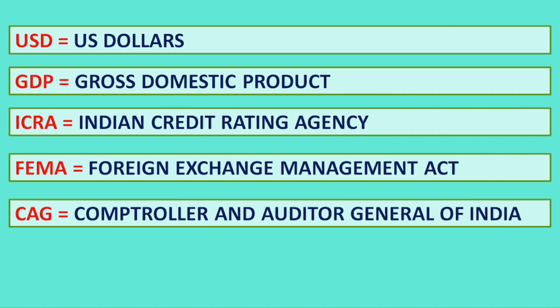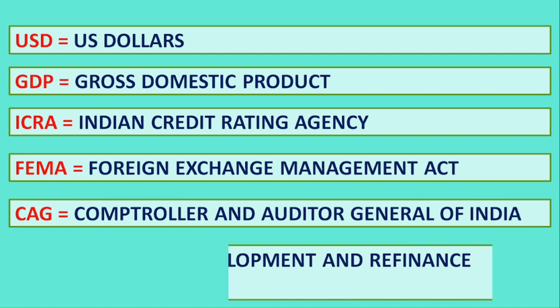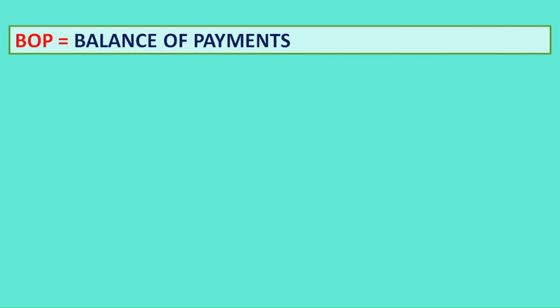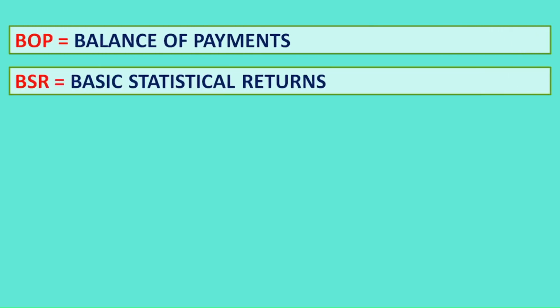CAG: Comptroller and Auditor General of India. MUDRA: Micro Units Development and Refinance Agency. BOP: Balance of Payments. BSR: Basic Statistical Returns.